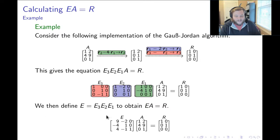So, in this case, this gives me E having columns 9, negative 4, 4, and then negative 2, 1, negative 1, and 0, 0, 1. This is what happened when I multiplied all three of these elementary matrices together.